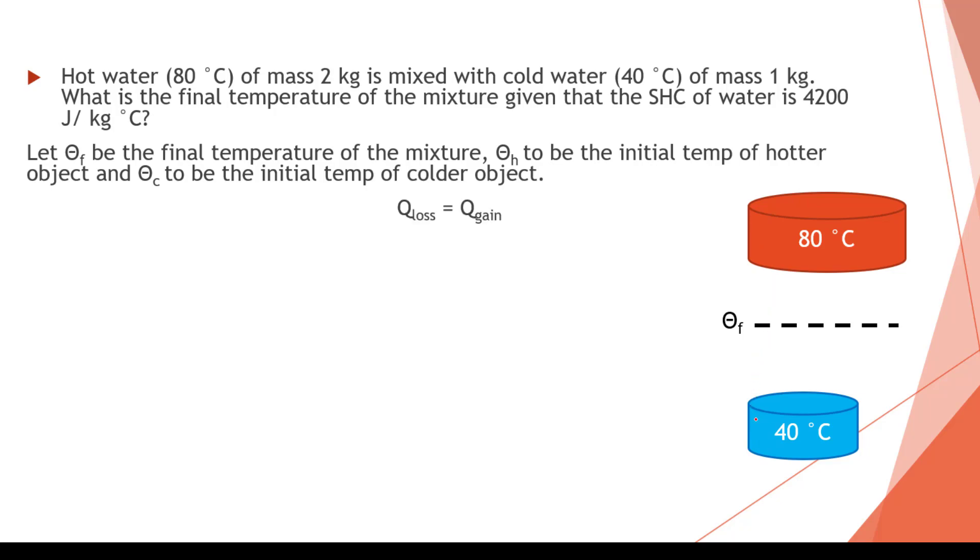So energy loss equals the energy gain. So energy loss by the hotter object is completely gained by the colder object. This is the hot object mc theta. This is the cold object mc theta as denoted. This delta H is from 80 to the final temperature. This colder temperature change is from 40 to this final temperature change.